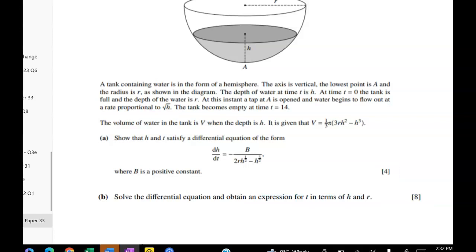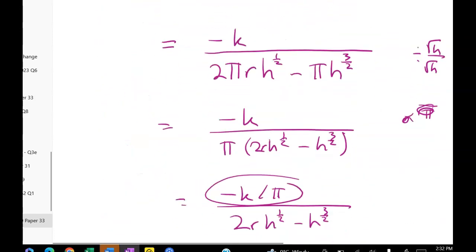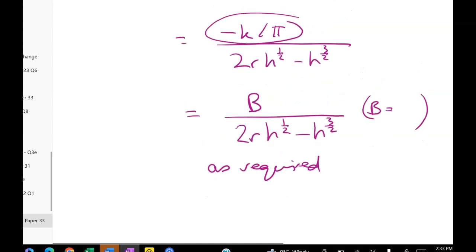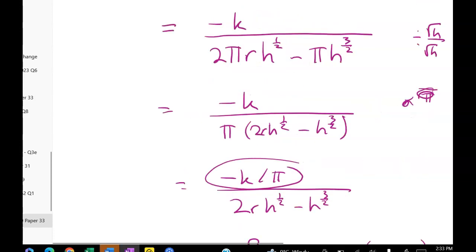We need to get it to have a negative. So actually I'm just going to fix that up. And go back to the step here. So we've got the negative. We want to keep the negative. So B is equal to K over pi. All right now what we've got to do next is we have to solve that differential equation.